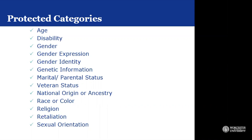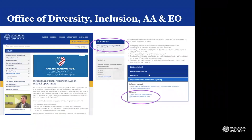I would like to take some time to show you how to find it. When you go to our site, you are able to scroll down and see related links. The related links section includes the Equal Opportunity, Diversity, and Affirmative Action Plan as the first link that you can access.